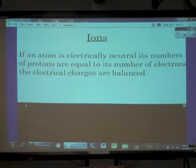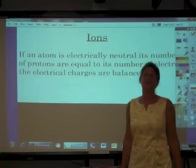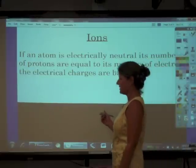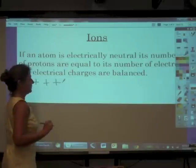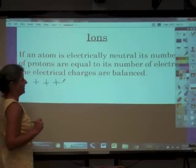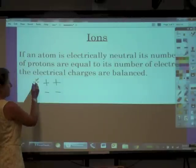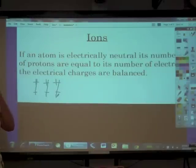If we take a neutral atom — let's do something really easy, for instance, lithium. Lithium is atomic number three, so it has three protons, which gives it three positive charges. And if it's electrically neutral, that means it also has three electrons — negative, negative, negative. So for every positive there's a negative to balance it, and we have zero overall charge.